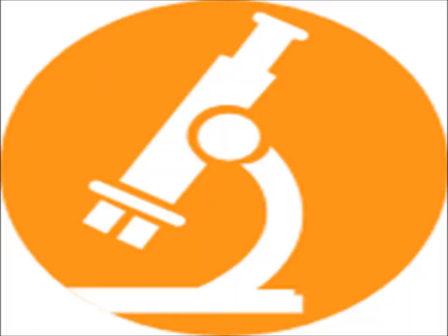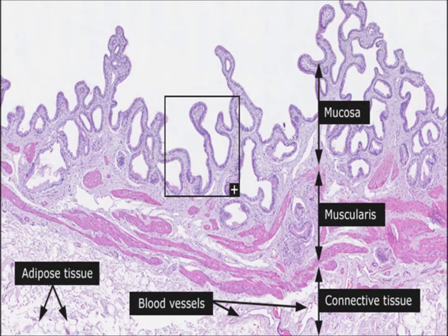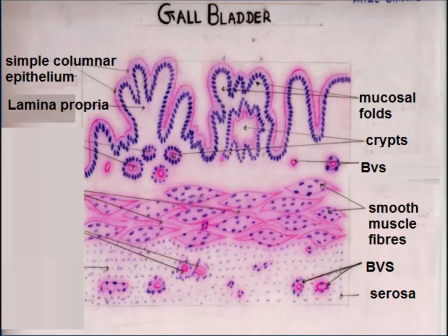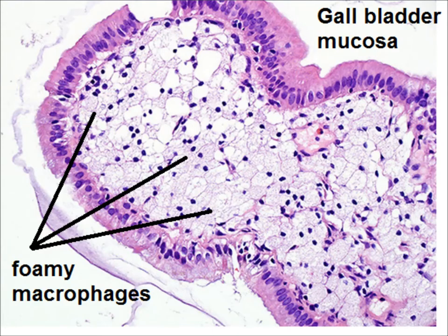To review the normal histology of the gallbladder: the gallbladder has mucosa, muscularis, and connective tissue — there is no submucosa in the gallbladder. The simple columnar epithelium is thrown into folds. There are mucosal folds, crypts, blood vessels, and smooth muscle fibers.